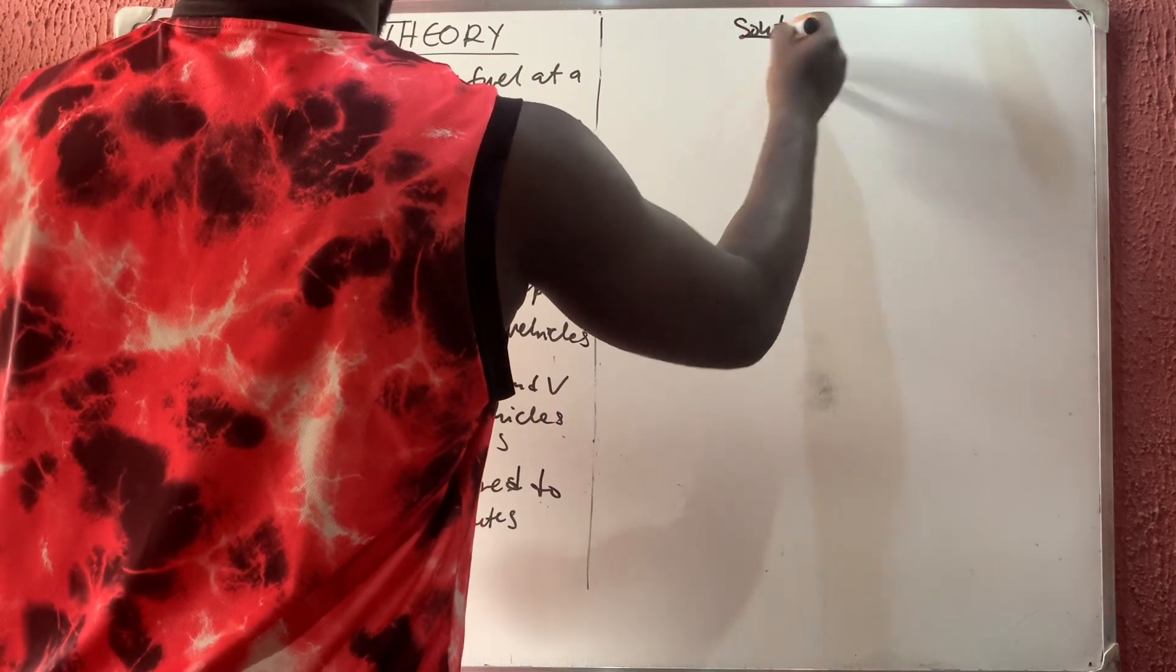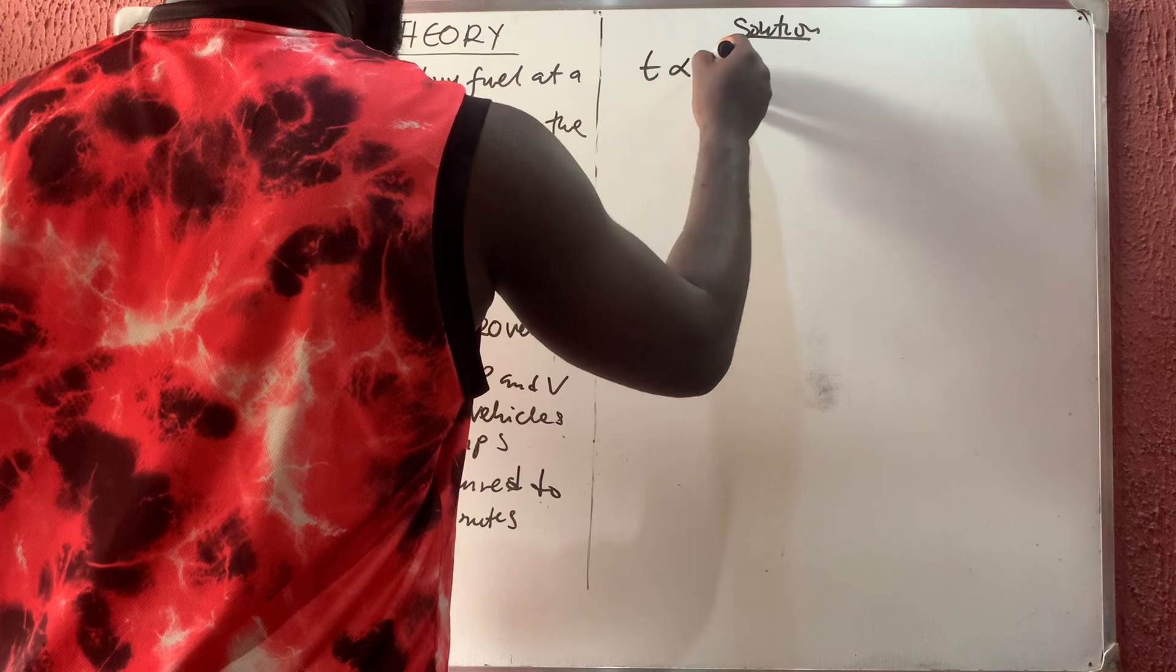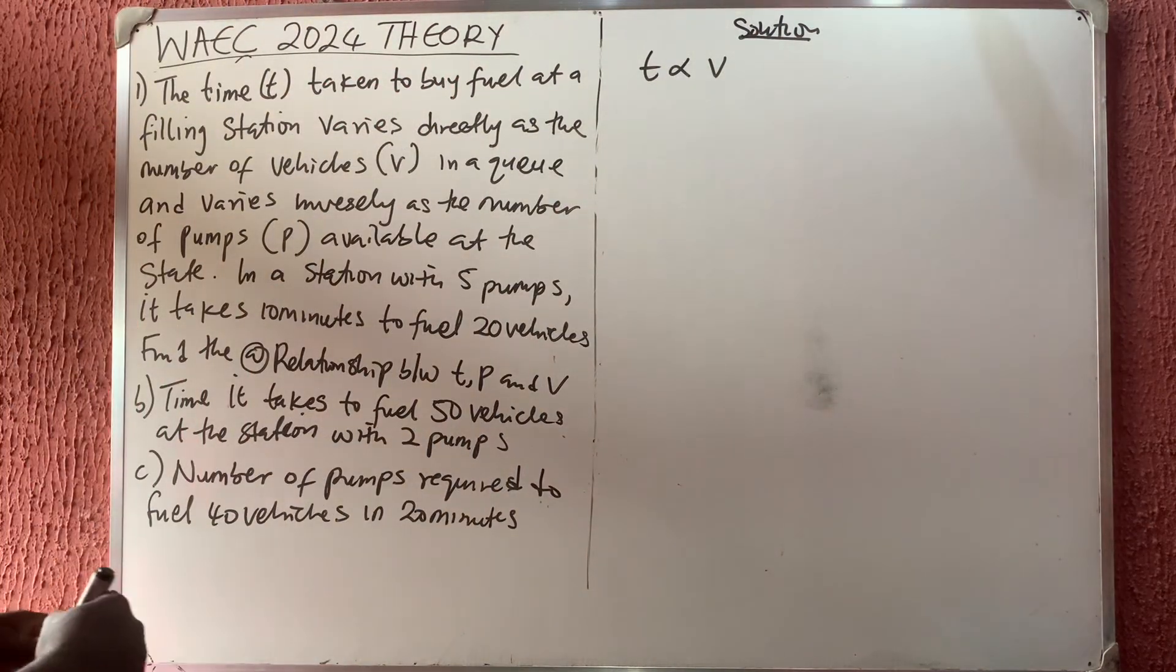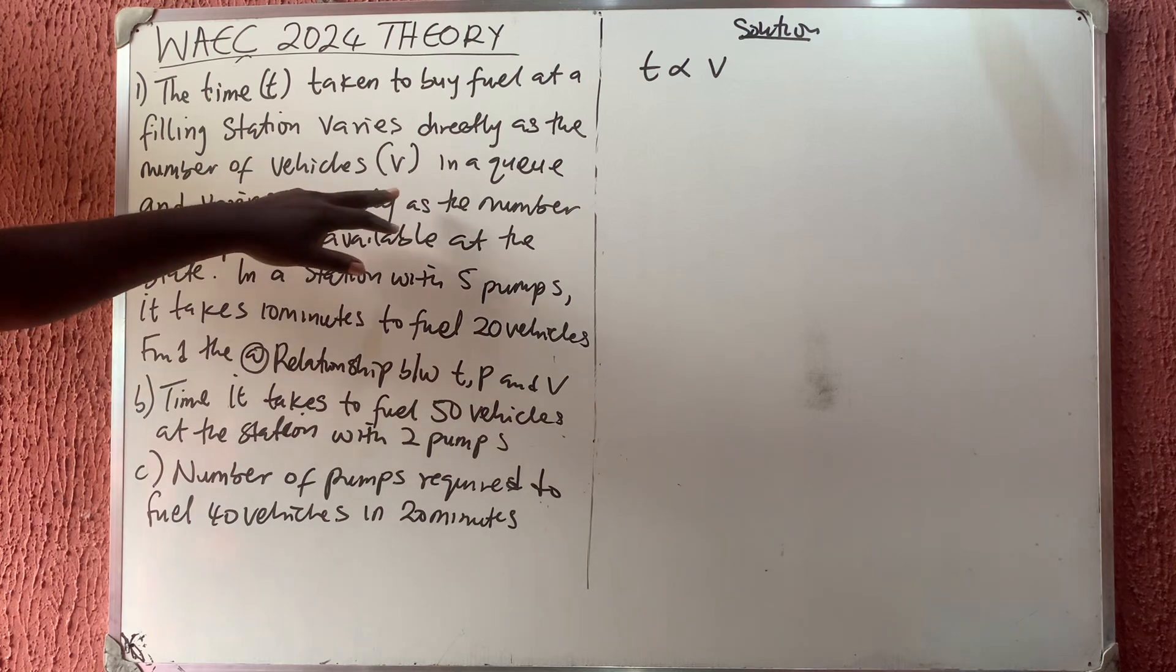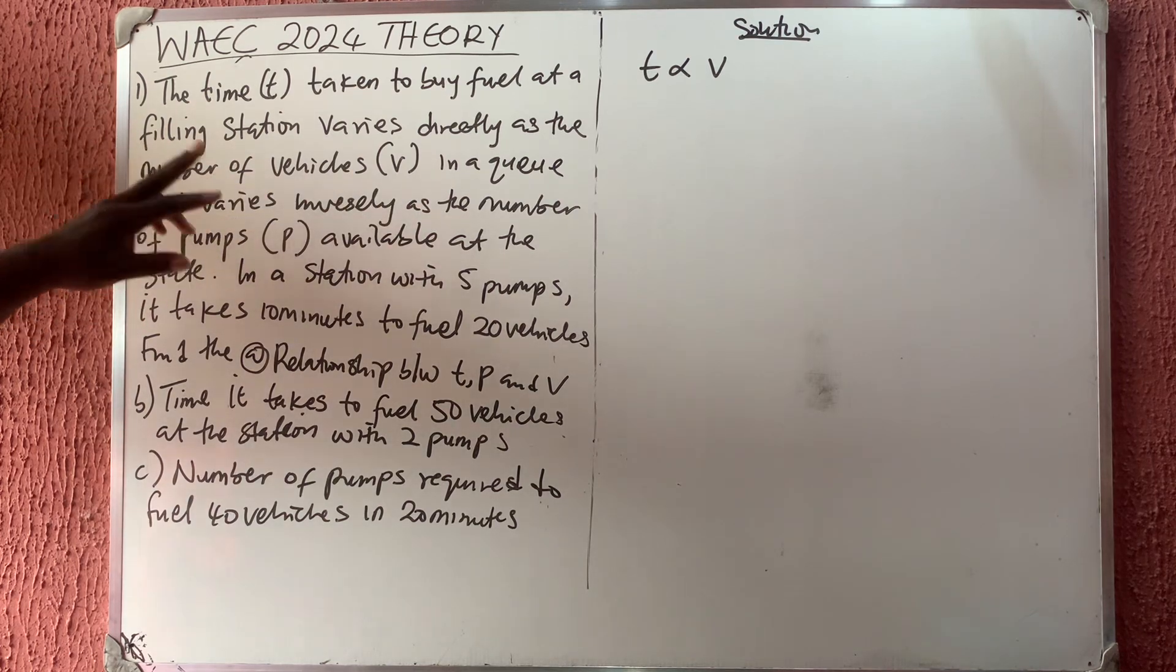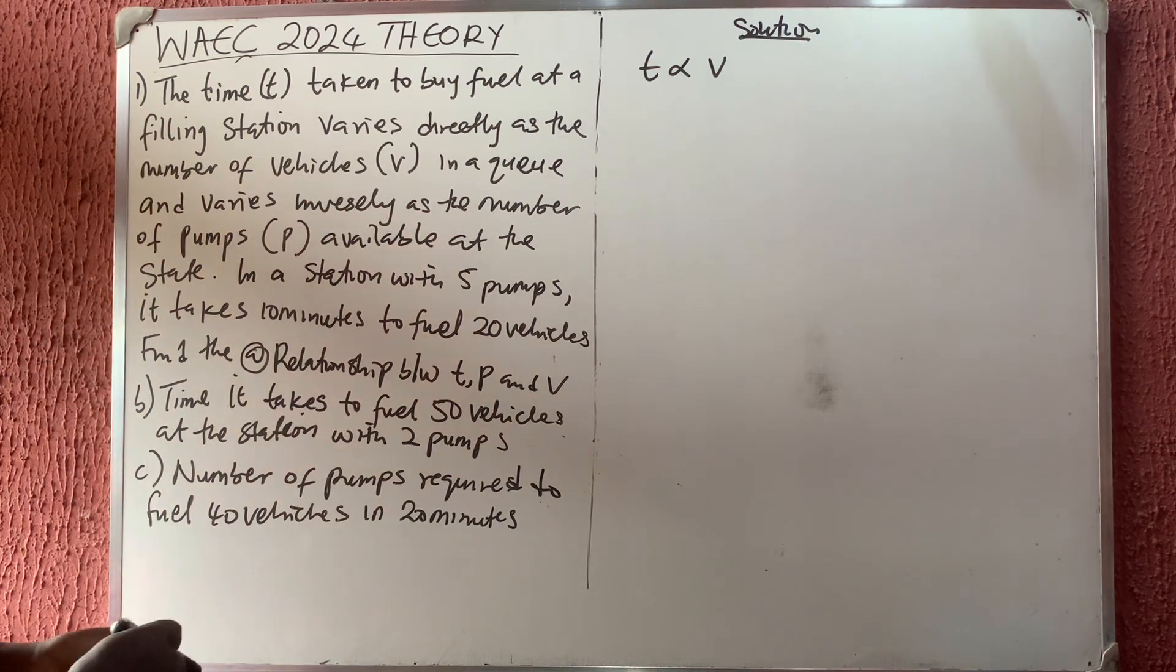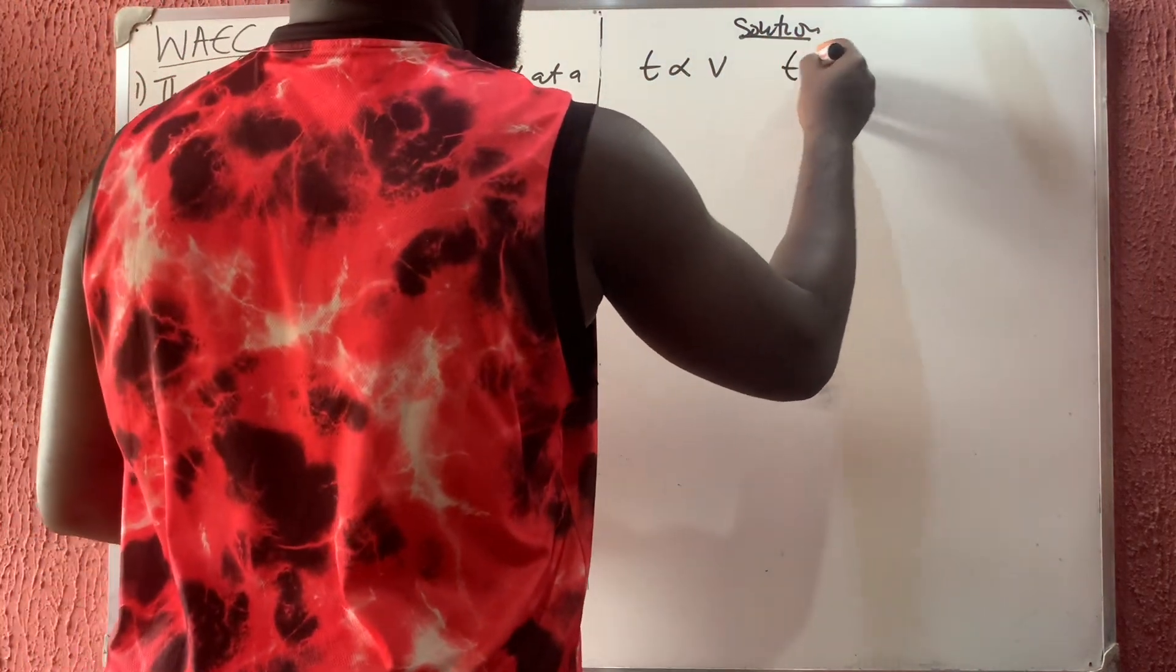We said that time varies directly as v. There's a value, the number of vehicles v in a queue, and it varies inversely as the number of pumps. The same t again varies inversely as the number of pumps p.